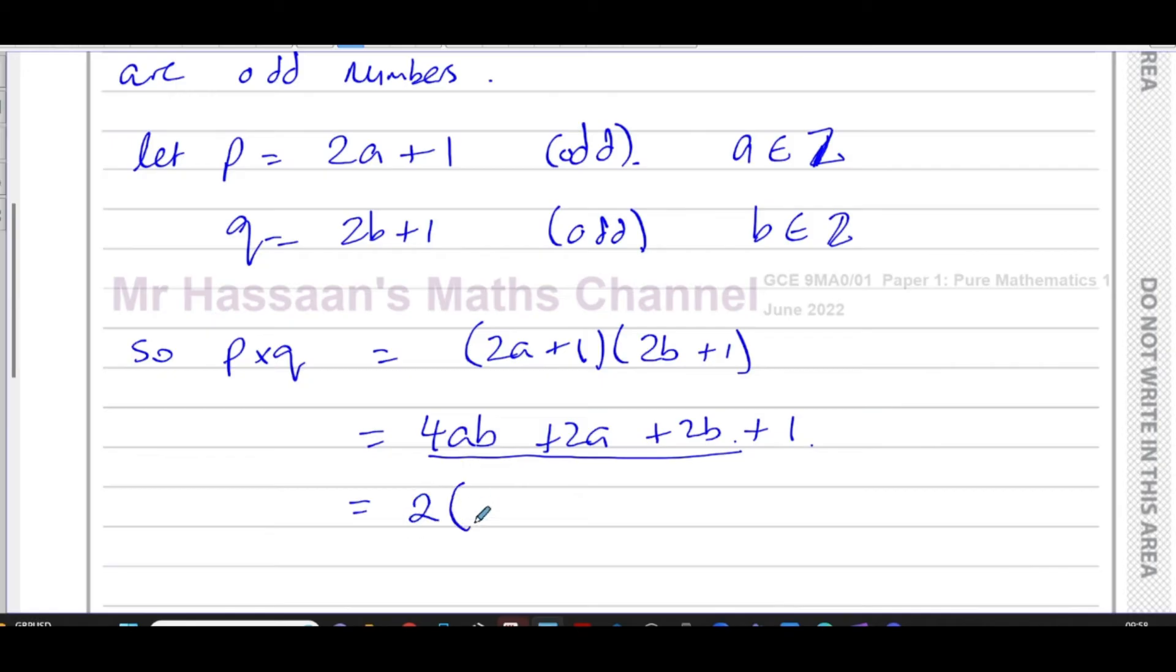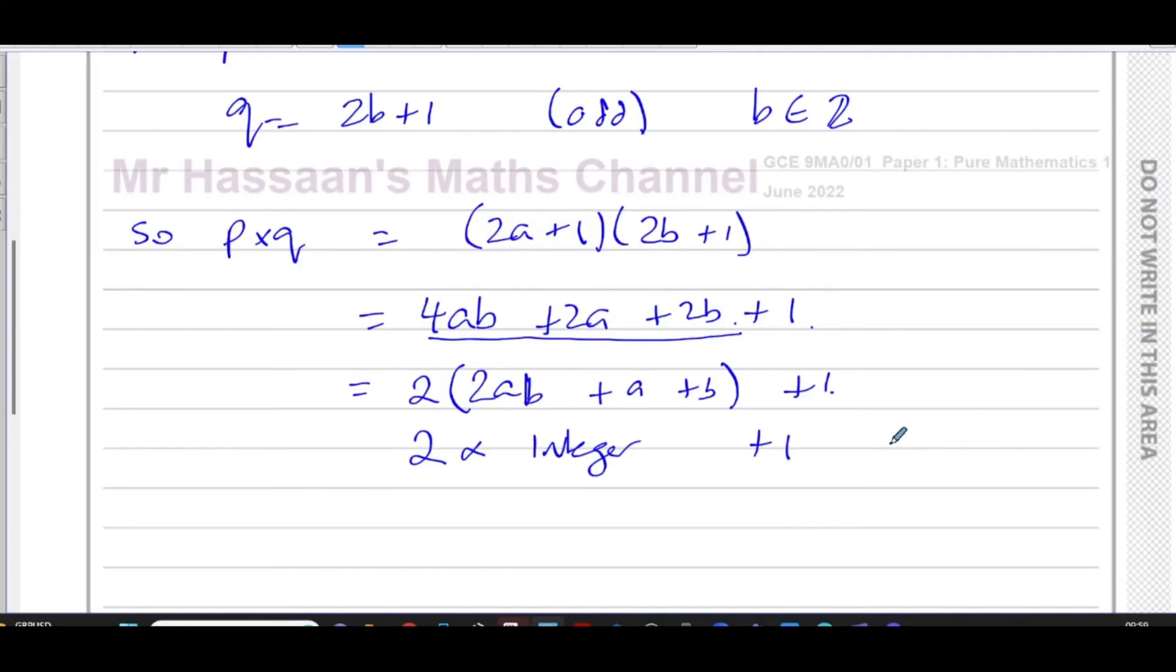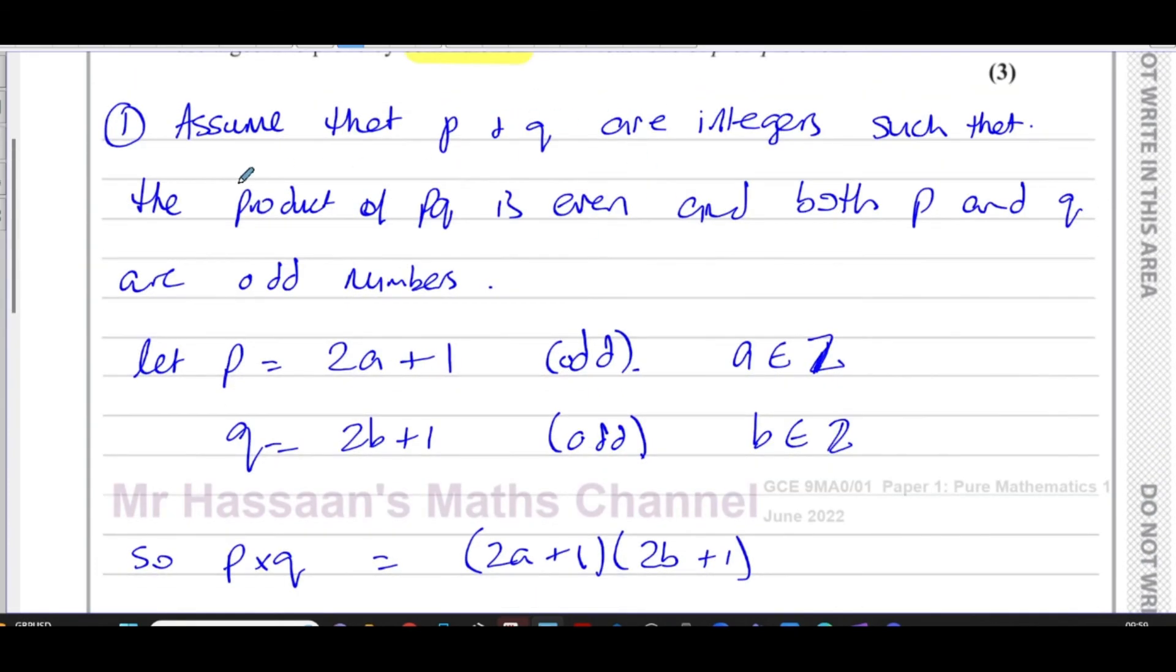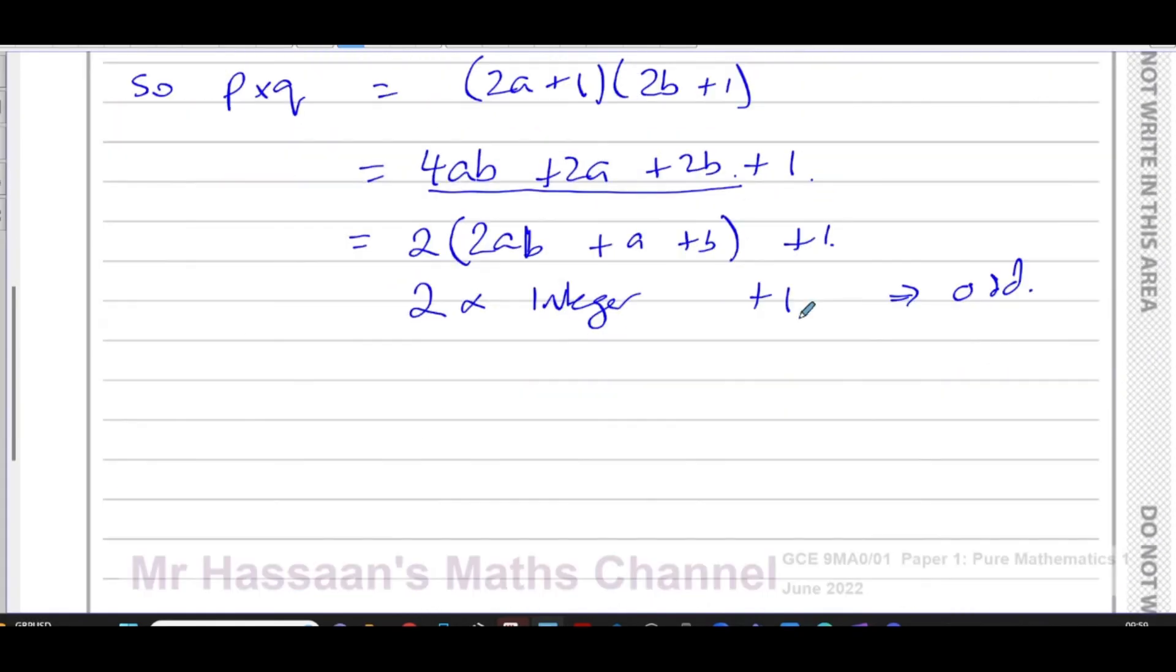From here we can take out a common factor of 2 in the first three terms. So 2 is common, and we're left with 2AB plus A plus B close that bracket plus 1. So we end up with 2 times an integer plus 1. So this is something definitely which is odd. So there's a contradiction because we said that PQ, integers such that the product of PQ is even. But here the product of PQ is odd we've shown. This is a contradiction.